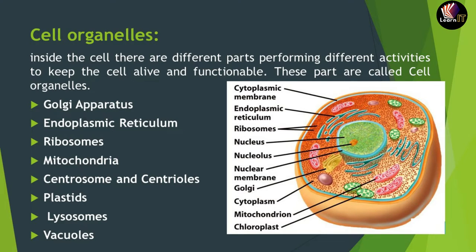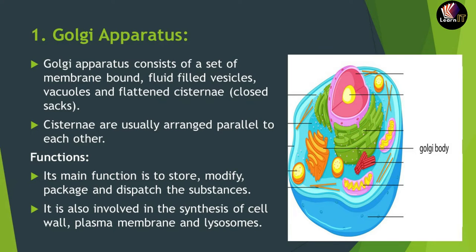The first organelle is the Golgi apparatus. In the diagram, it appears as an orange, bread-like structure known as the Golgi body. The Golgi body consists of membrane-bound structures containing fluid vesicles and vacuoles, and it also contains closed sacs called flattened cisternae.